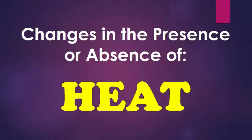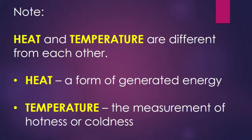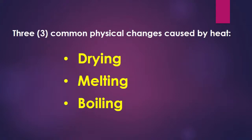Changes in matter in the presence or absence of heat. We now know about the fire triangle and its components: heat, fuel, and oxygen. We now focus on heat — its effect to the changes a material can experience when it is present or when there is no heat. Note, class, that heat and temperature are different from each other. Yung heat kasi is a form of energy, yung temperature naman is the degree or measurement of hotness or coldness of a material. The effects of heat on a material are the following: drying, melting, and boiling.